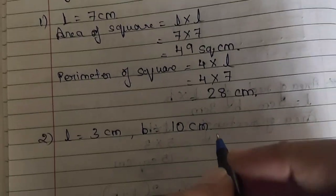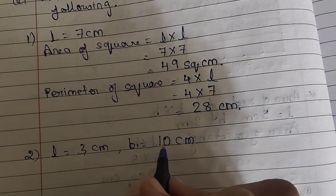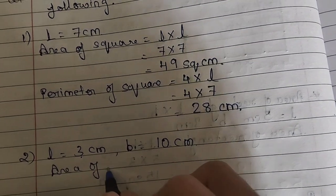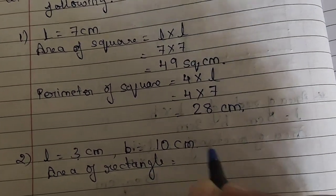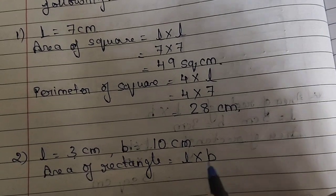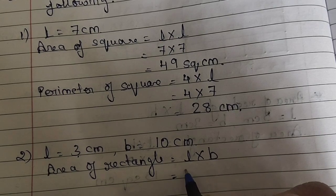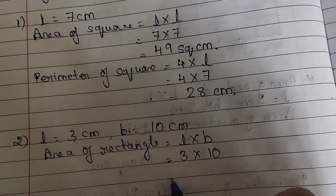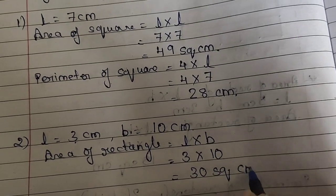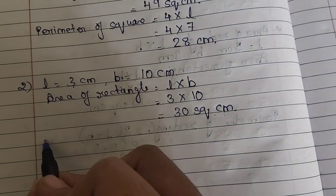Next sum: length = 3 cm, breadth = 10 cm. Since both length and breadth are given and they are different, this is a rectangle. Area of rectangle = L × B = 3 × 10 = 30 square centimeters.